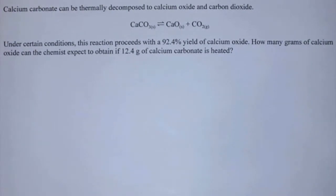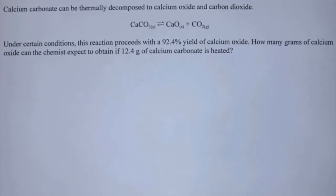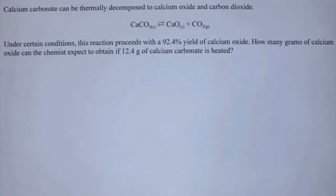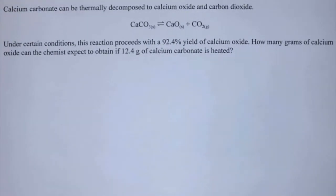Welcome back. In this example we'll do some more percent yield — it's a slightly different question. We're told what the percent yield is and we need to work backwards to figure out the actual yield. Calcium carbonate can be thermally decomposed to calcium oxide and carbon dioxide. Under certain conditions this reaction proceeds with a 92.4% yield of calcium oxide. How many grams of calcium oxide can the chemist expect to obtain if 12.4 grams of calcium carbonate is heated?